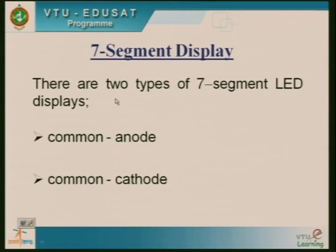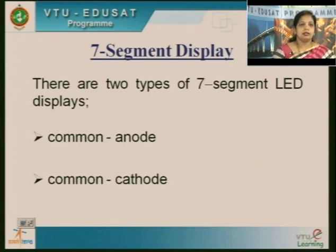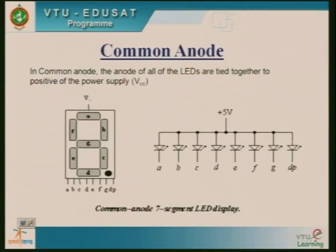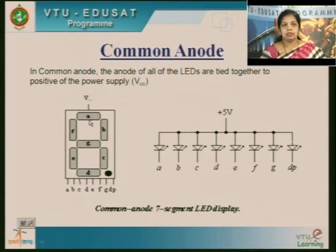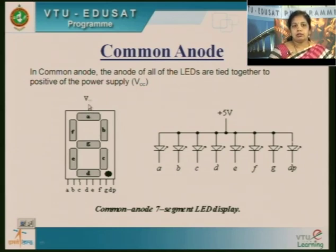This display unit has two types of 7-segment LED configurations: common anode and common cathode. In common anode configuration, we have 7 segments — each segment named A, B, C, D, E, F, G — plus an additional dot pin. In common anode configuration, the anode of all the LEDs are tied to the positive power supply VCC. Each segment represents one LED; with 7 segments you have 7 LEDs.